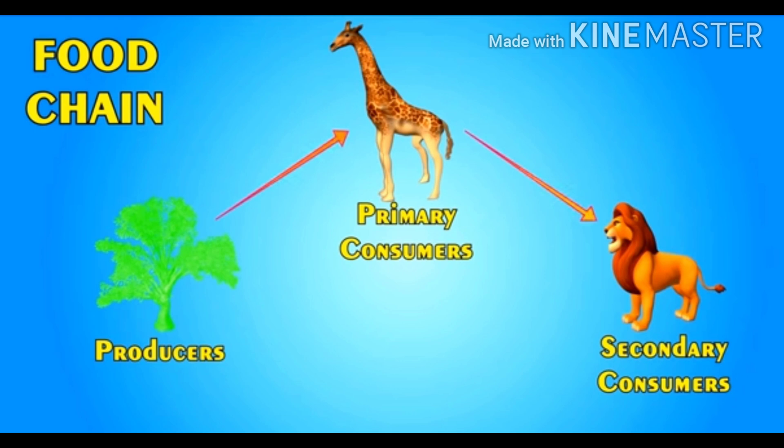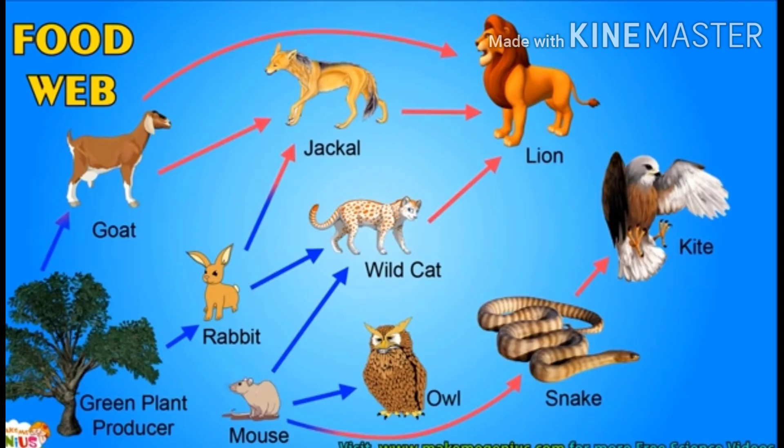The species that eat plants are called primary consumers, and the species that eat animals which depend on plants are called secondary consumers. Look at the picture — you can see some food chains here.